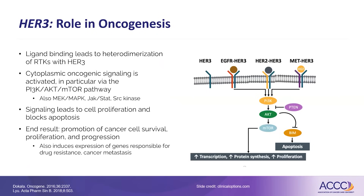What is the role in oncogenesis? Ligand binding leads to heterodimerization of receptor tyrosine kinases with HER3. Cytoplasmic oncogenic signaling is activated, particularly by the PI3K, AKT, and mTOR pathways, with other pathways involved as well. The signaling leads to cell proliferation and blocks apoptosis — in other words, makes cancer cells grow. The end result is promoting cancer cell survival, proliferation, and progression, with lots of other mechanisms of action as well.